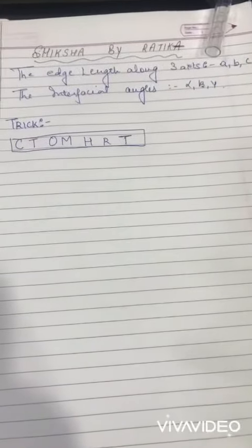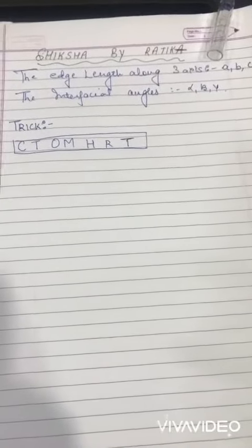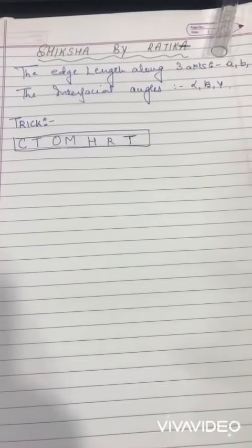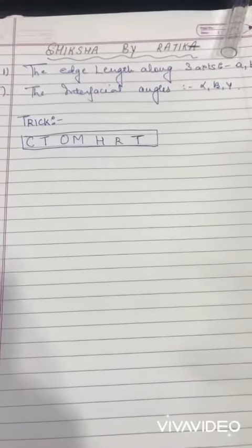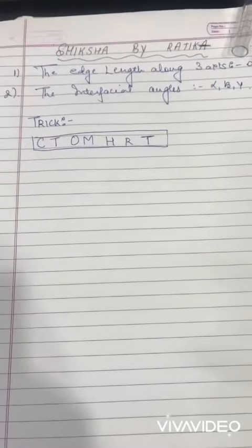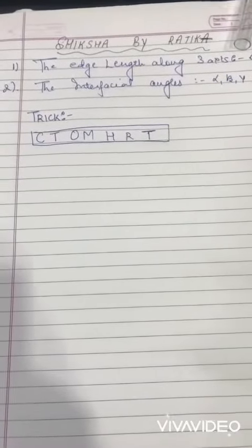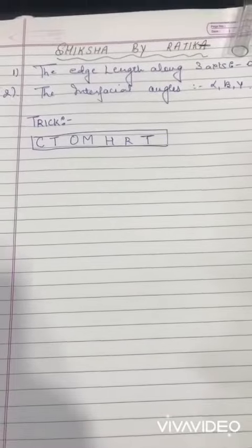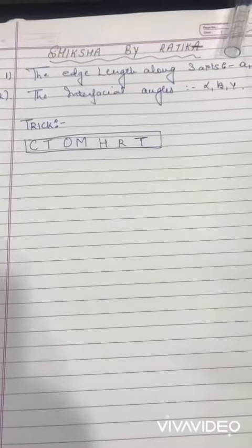Hello students, welcome back to my channel Shiksha by Ratika. In this class, I'm going to tell you about the structure of crystalline solid and the primitive unit cell. The regular array of the building blocks - atoms, ions, molecules - inside crystalline solid is called crystal lattice.